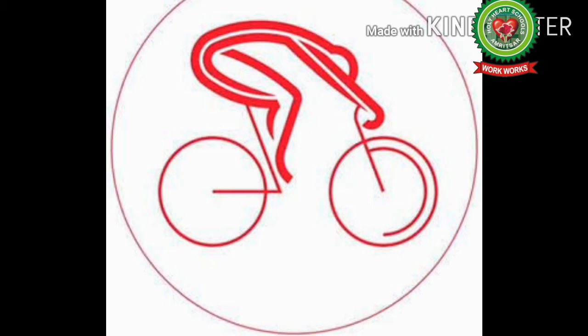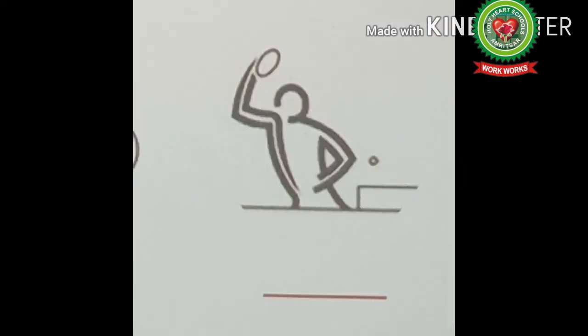This is the symbol of table tennis. It took place between 24th July to 2nd August at the Scotstoun Sports Campus. Singapore won the table tennis competitions. This is the symbol of weightlifting. Weightlifting competitions were held between 24th July to 2nd August.